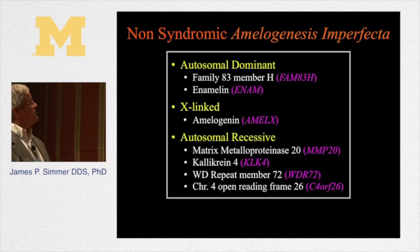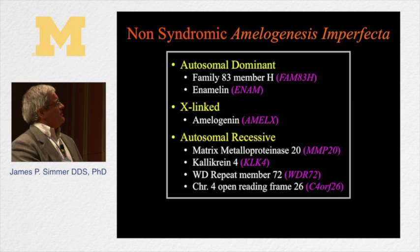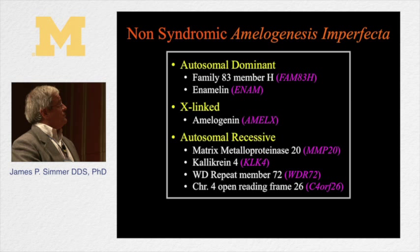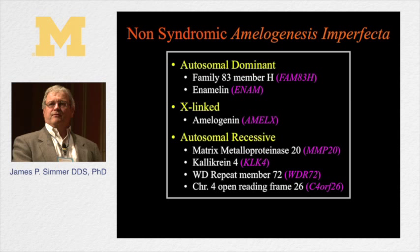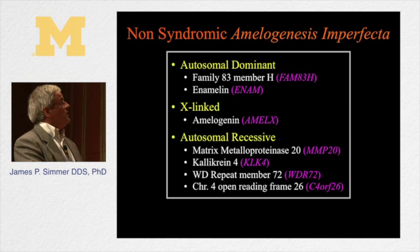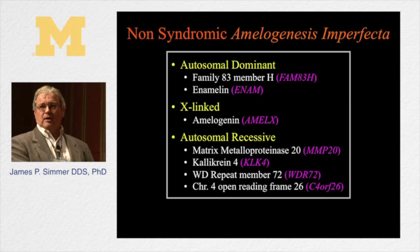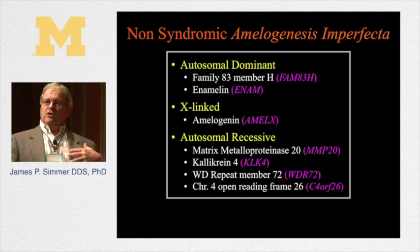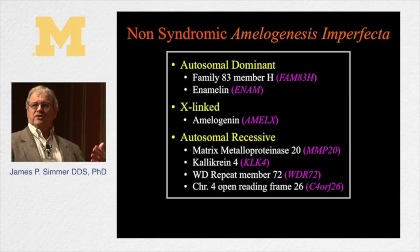Amelogenesis imperfecta can have different patterns of inheritance. We're now up to about seven genes involved in these different forms of amelogenesis imperfecta. Only about half of the cases are caused by these known genes, so there's still work to do to find the rest. In these non-syndromic cases, defects are occurring only in the dental enamel — you don't see defects in other parts of the body — because these genes are specialized for tooth development.